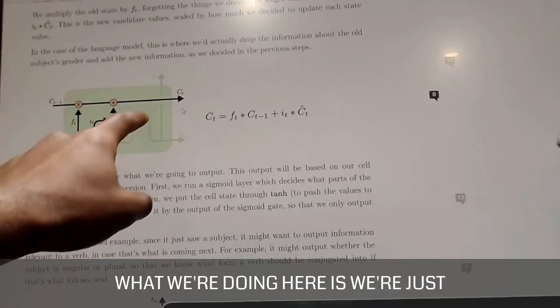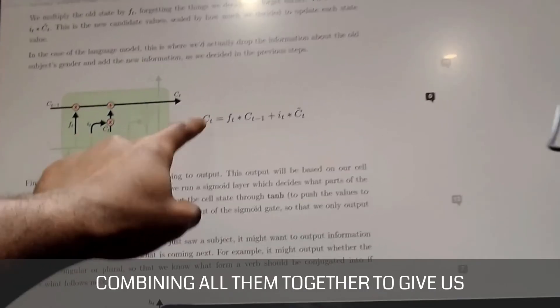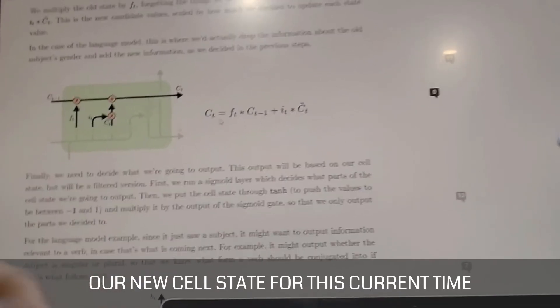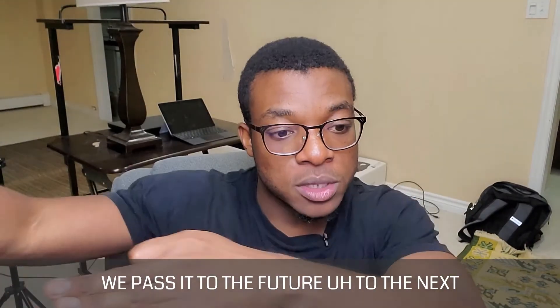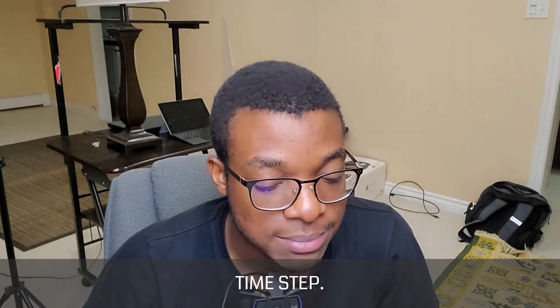What we're doing here is we're just combining all of them together to give us our new cell state for this current time period. And then we pass that cell state, we pass it to the future or to the next time step.